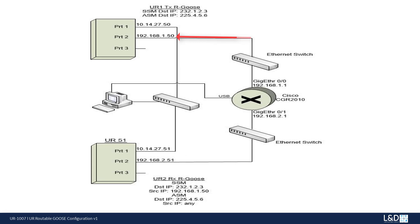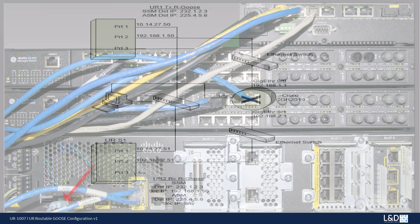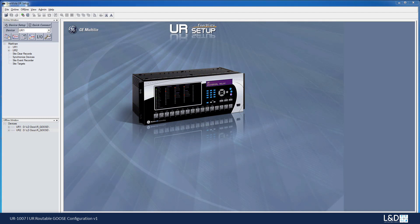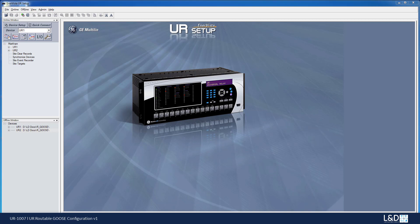Port 2 of UR1 is connected to an Ethernet switch, and that Ethernet switch is then connected to port 00 of the Cisco router. Then from port 01 of the Cisco router, we connect to another Ethernet switch, and that switch connects to port 2 on UR2. Our configuration computer also has a serial connection that allows us to enter the configuration into the Cisco router. In order to pass the Argoose messages from the network in UR1 to the network in UR2, we'll have to configure our router.